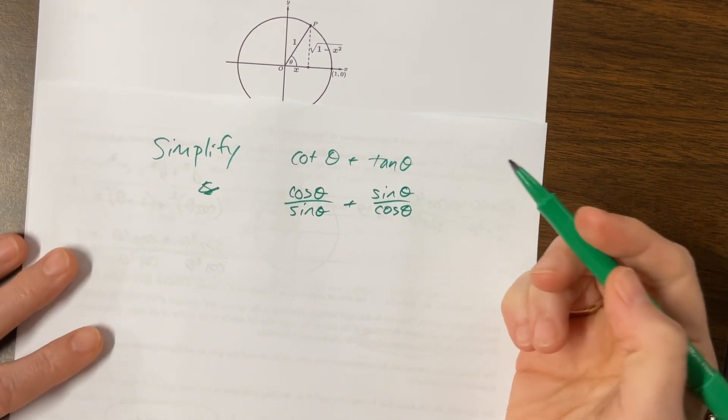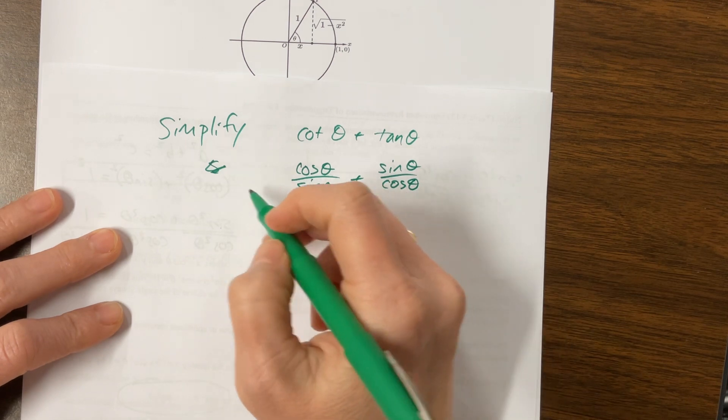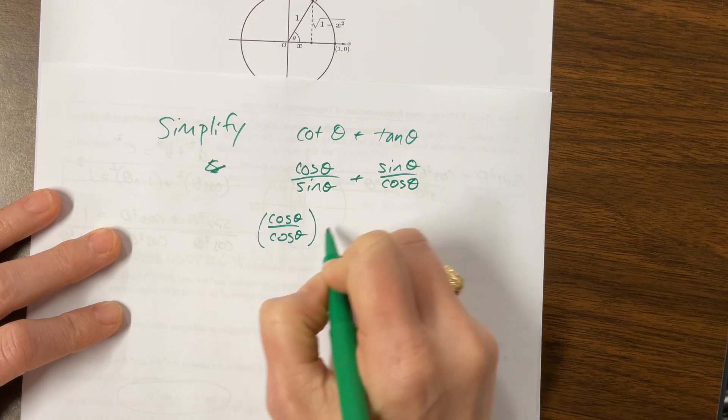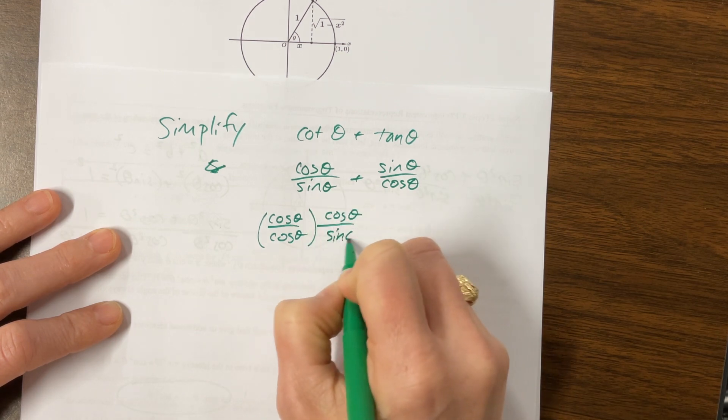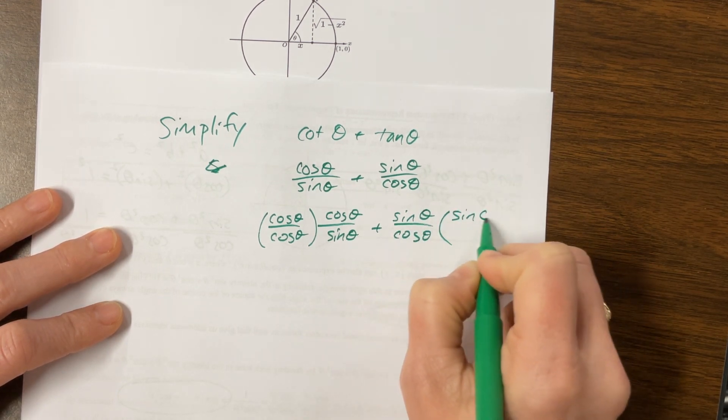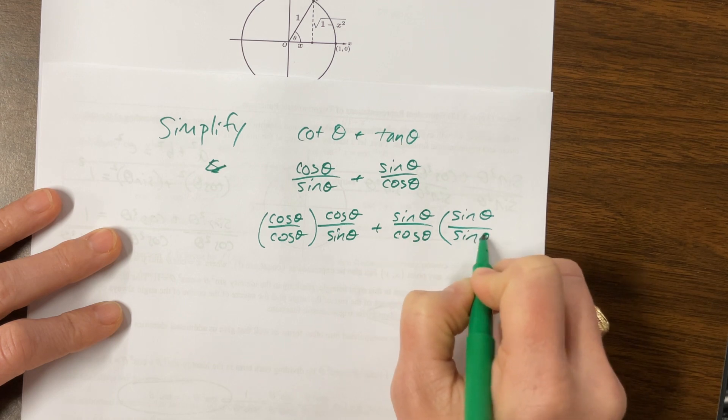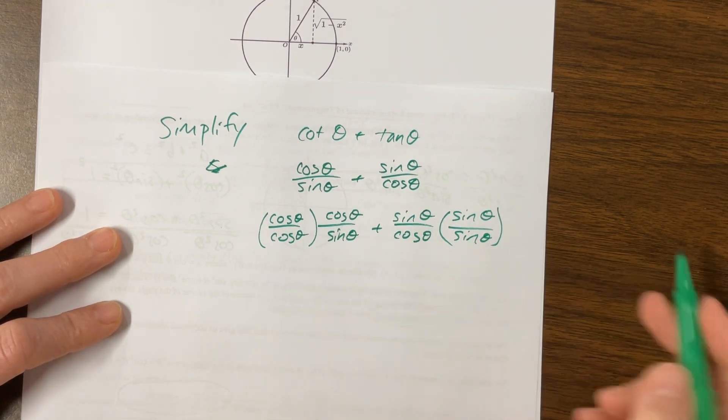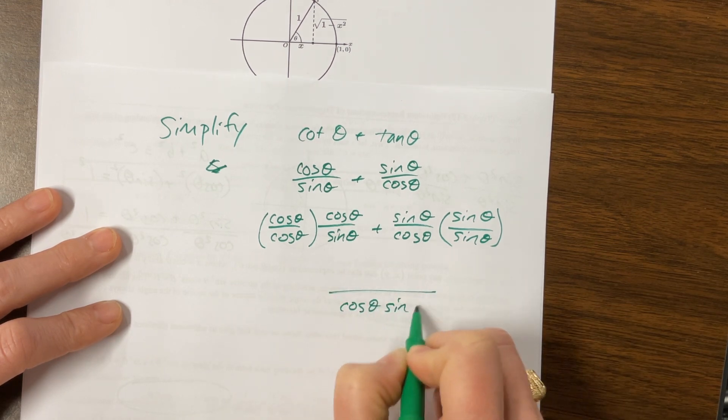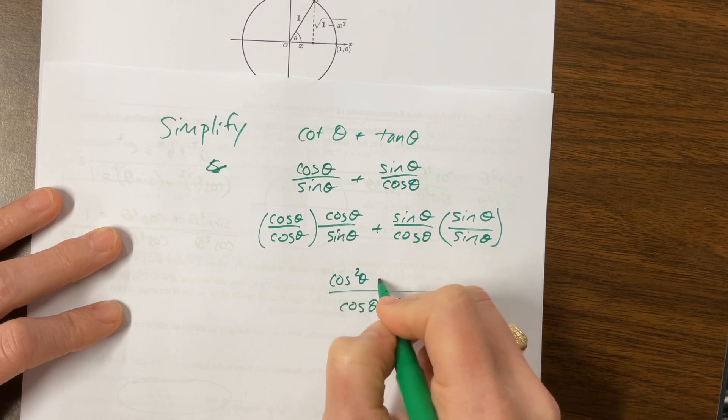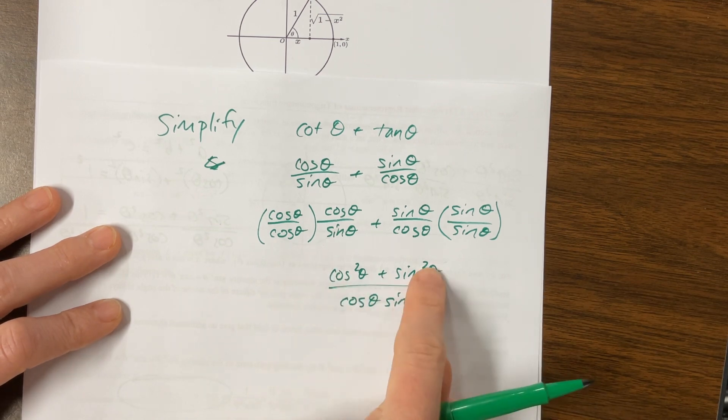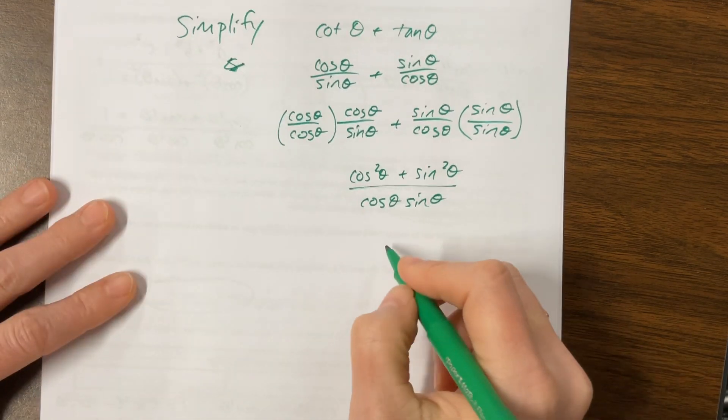So then the next thing I want to do when I'm adding fractions is get a common denominator. I love identities. I think they're so stinking fun. And I should have a lot of resources for how to prove them, but I'm just going to work through his notes. So this gives us the same denominator of cosine theta times sine theta and a numerator of cosine squared plus sine squared.